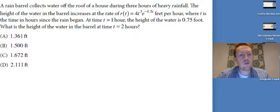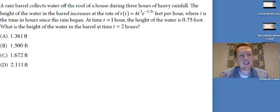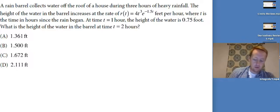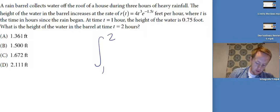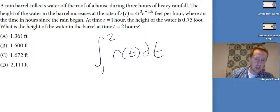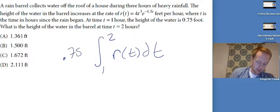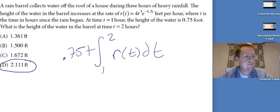A rain barrel collects water off the roof of a house during three hours of heavy rainfall. The height of the water in the barrel increases at the rate of R of T equals that expression, in feet per hour, where T is the time in hours since the rain began. At time T equals 1 hour, the height of the water is 0.75 feet. What is the height of the water at time T equals 2 hours? Just like the last one, I'm going to integrate from the two T values I know, the function R of T. That gives me the change in height. I have the initial condition and when you put that in the calculator you get 2.1.